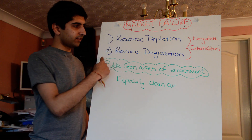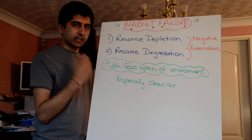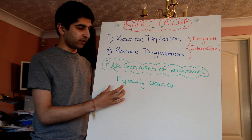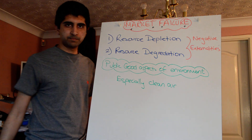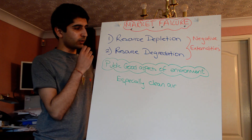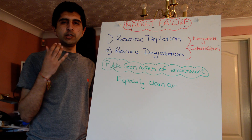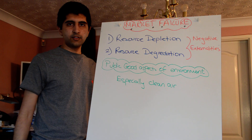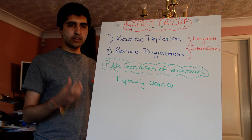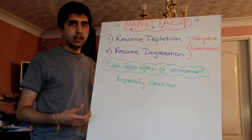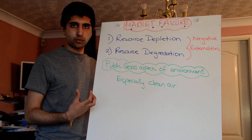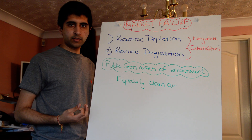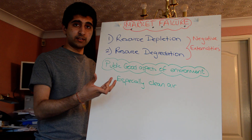The first one is resource depletion, the second one is resource degradation, and the third is the public good aspect of environmental resources, especially clean air as a public good. Resource depletion is when we use up a stock of natural resources — fossil fuels and oils, for example — using up resources faster than they actually come back to us. Doing so is a negative externality, and often using them up creates further negative externalities.